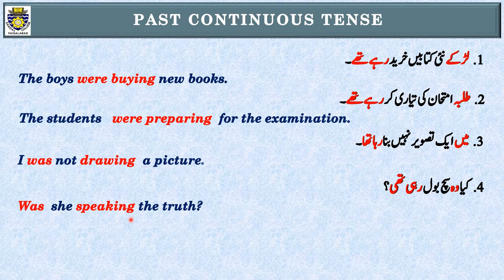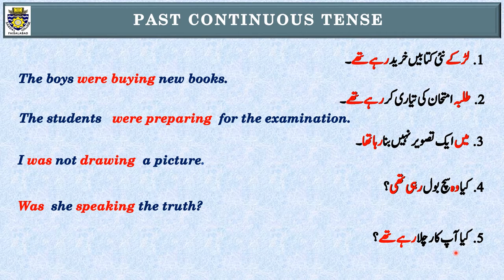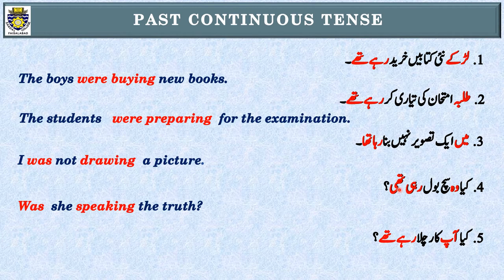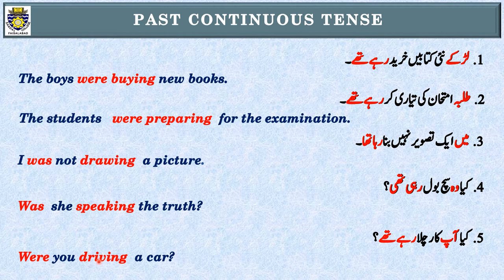Sentence number five: کیا آپ کار چلا رہے تھے؟ First step: 'رہے تھے' — Past Continuous Tense کی پہچان۔ Second step: 'کیا' کو ignore کریں — subject 'آپ' بچتا ہے، جس کی English 'you' ہے۔ You کے ساتھ Past Continuous Tense میں were use کرتے ہیں: you were driving۔ Interrogative ہے تو were کو sentence کے start میں لائیں گے: Were you driving a car? — and question mark at the end of the interrogative sentence.